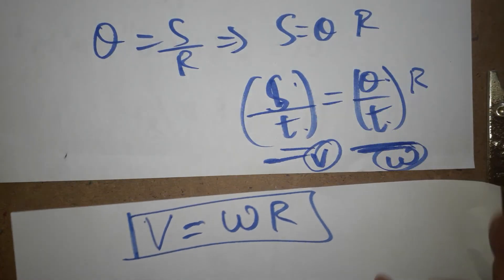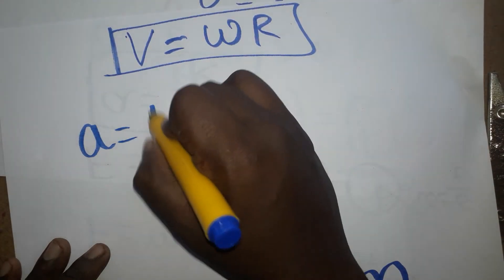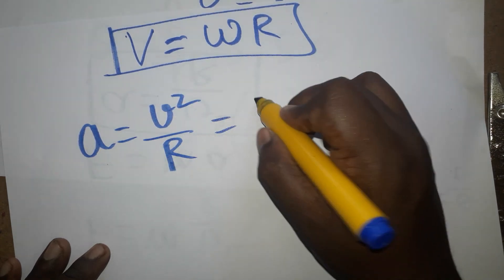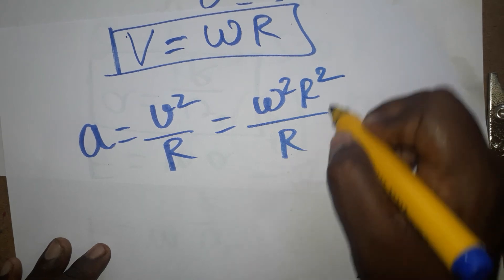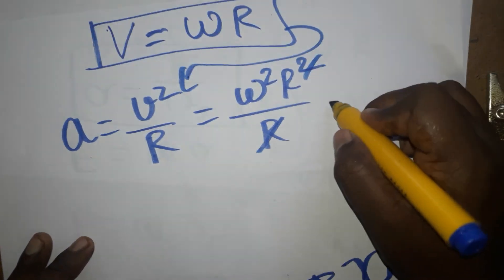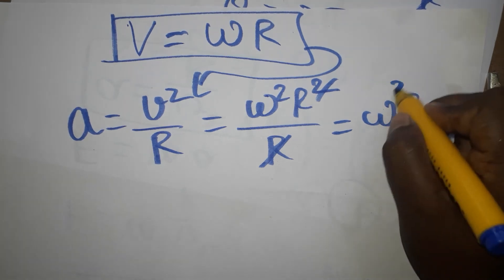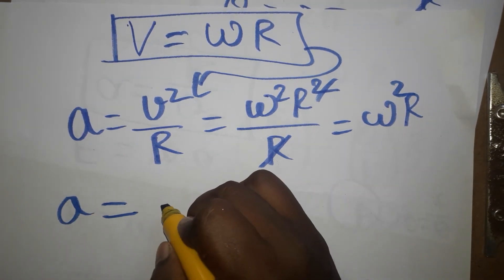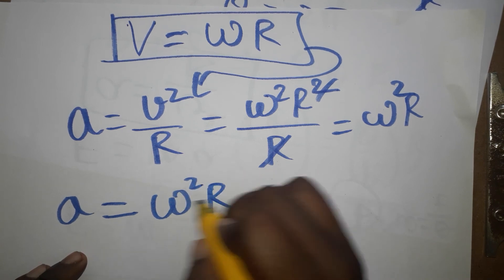Earlier we found that acceleration a = v²/r. Now substituting v = omega r, we get v² = omega²r², so a = omega²r²/r. The r's cancel, giving us: linear acceleration is equal to omega squared times r.